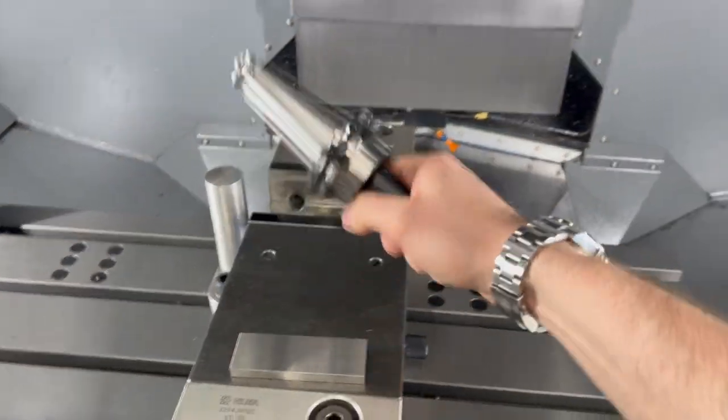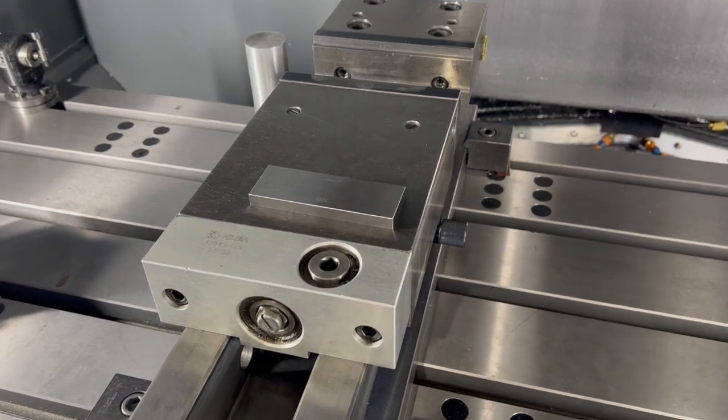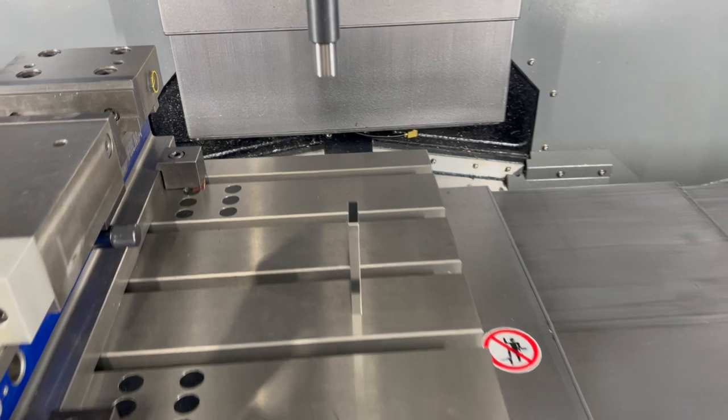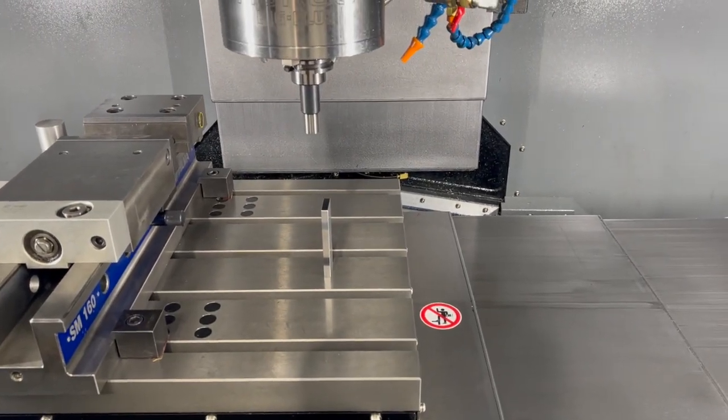Then you're going to grab your tool of a known length and pop it into your empty spindle. Then you're going to grab your slip, pop it on the table and start winding your spindle down in Z until you get onto the slip.